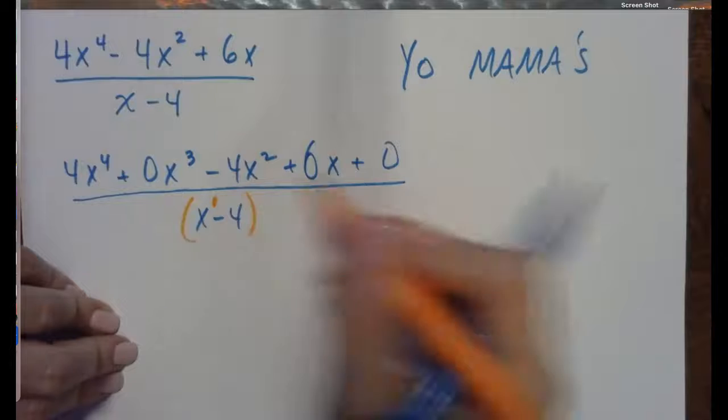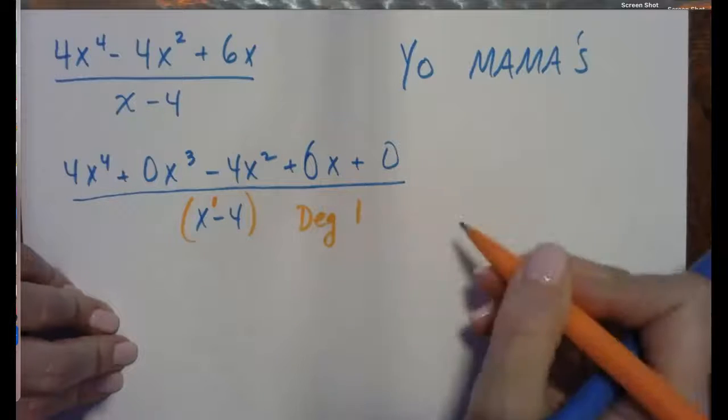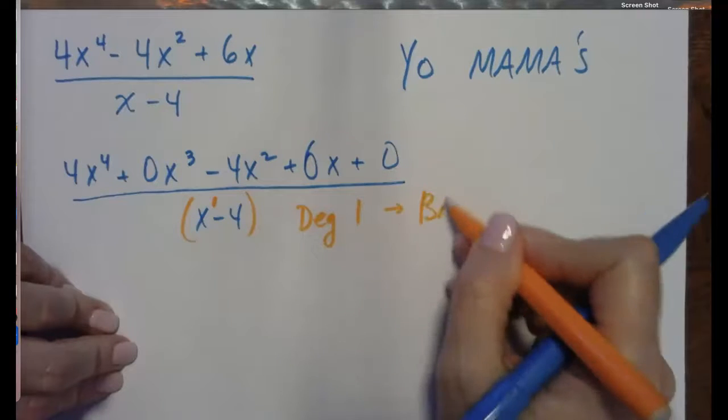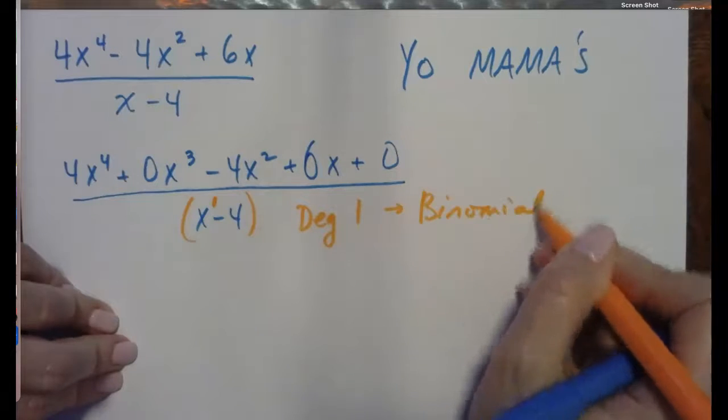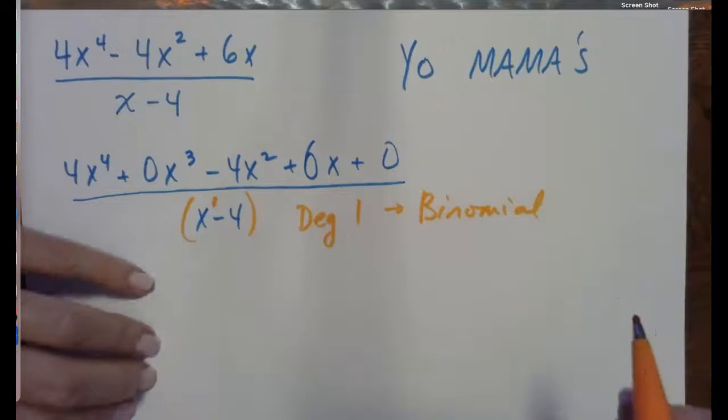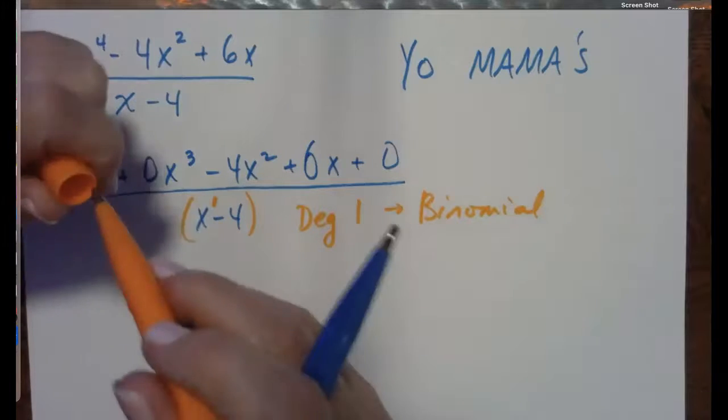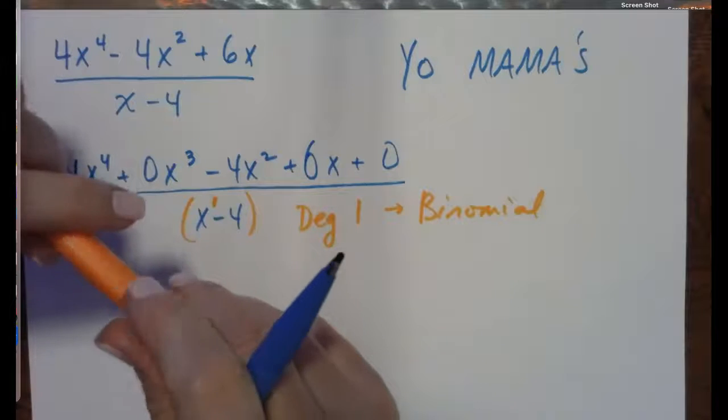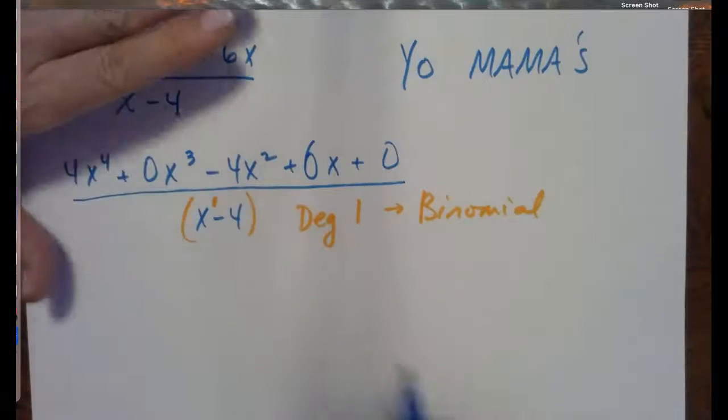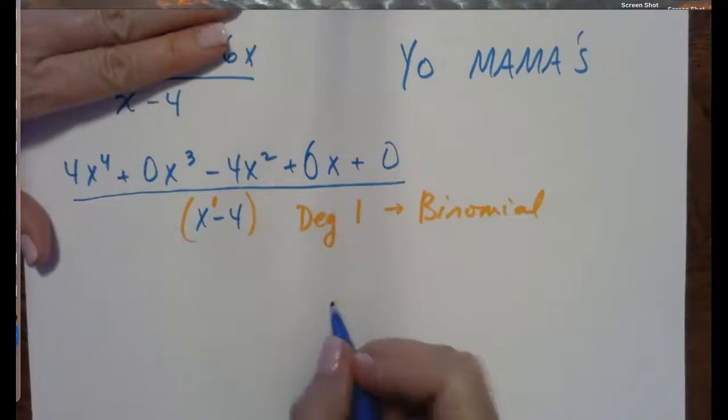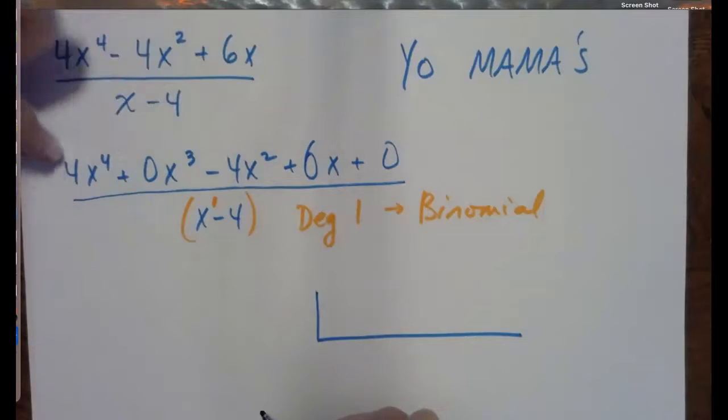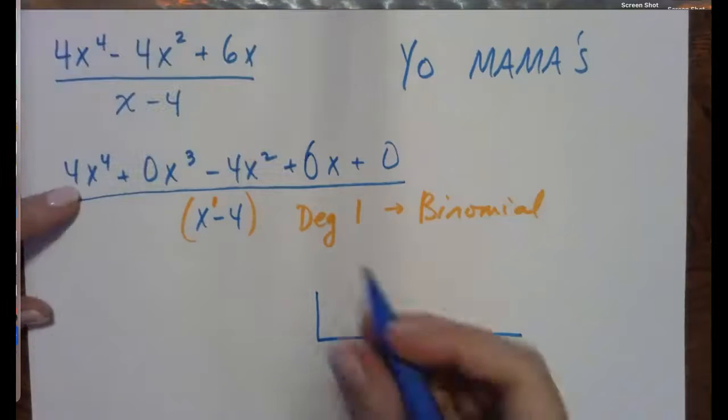Now our dividend is set up and ready to divide. Now we are able to use synthetic division because your divisor is a degree 1 binomial. Degree 1, first degree binomial. Only two terms, and x can only be to the first power. That is the only way that we can use synthetic division. And in order to use synthetic division, we are going to set up the box, not a house.